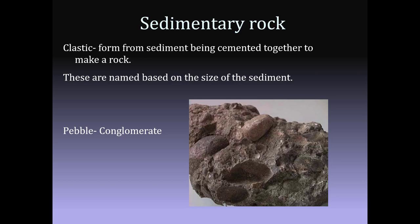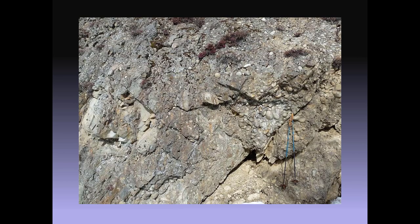If I have a rock made of pebble-sized particles, that is called a conglomerate. More specifically, if the pebbles are round it's a conglomerate; if the pebbles are angular it's a breccia. Here's one in the field — you can see these pebble-sized particles sticking out of it.